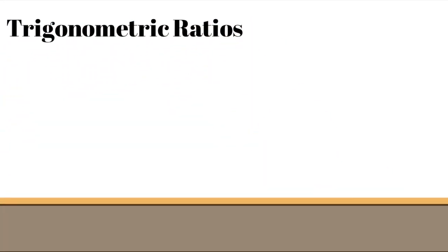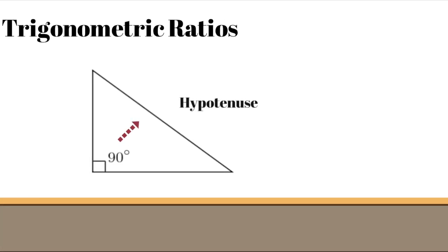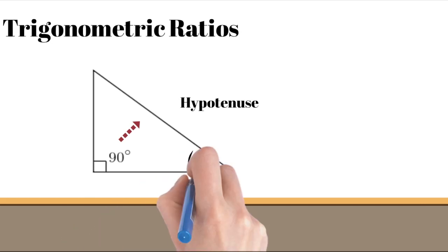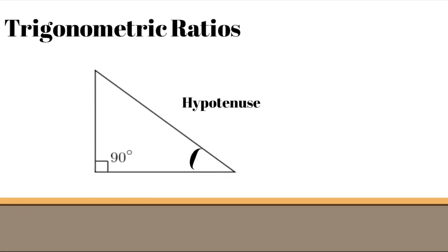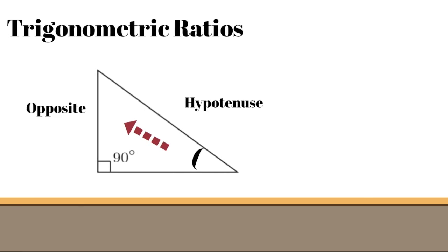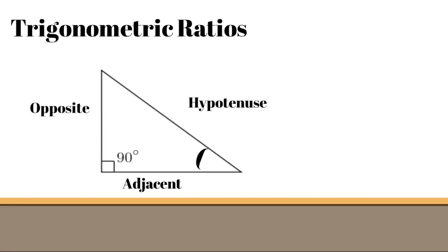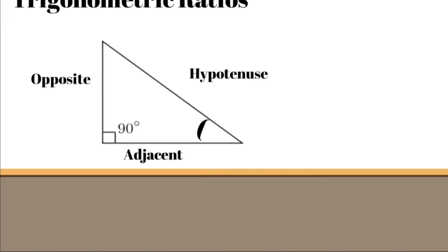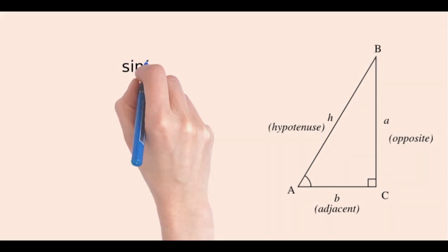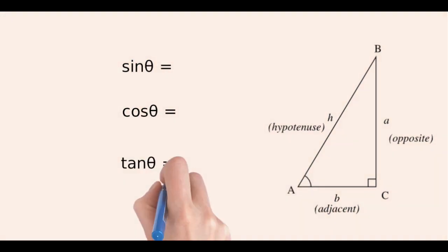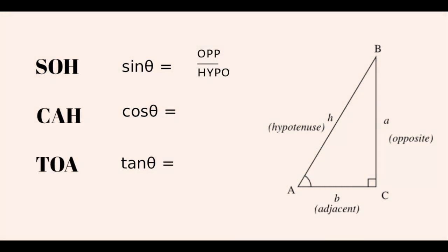Trigonometric ratios: The side opposite to the right angle is called the hypotenuse. The angle we call theta, and the side opposite to theta is called opposite. The last is adjacent. The three trigonometric ratios—sine, cosine, and tangent—can be remembered as SOHCAHTOA. Sine is opposite over hypotenuse, cosine is adjacent over hypotenuse, and tangent is opposite over adjacent.